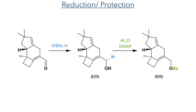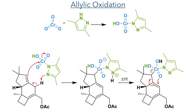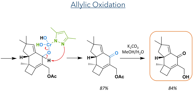As the aldehyde was no longer needed, it was reduced to an alcohol using DIBAL-H and protected as an acetate group in a 99% yield using acetic anhydride. This protection was necessary to prevent it from being re-oxidised in the next reaction, which was an allylic oxidation using chromium trioxide and dimethylpyrazole. The dimethylpyrazole forms a complex with the chromium, which then reacts with the starting material to form a carbon-chromium bond together with abstraction of the allylic proton. This then undergoes rearrangement forming a new carbon-oxygen bond together with breaking of the carbon-chromium bond, and the pyrazole group acts as a base to abstract a proton, forming the carbonyl group in an 87% yield.